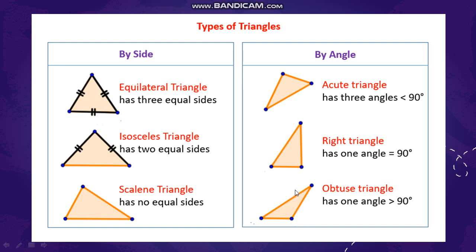Next is the right angle triangle. A triangle with one right angle is called a right angle triangle. The right angle is marked — as you can see, the right angle is over here. It will have one right angle which is equal to 90 degrees.